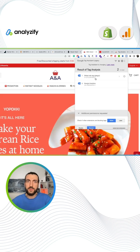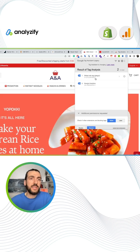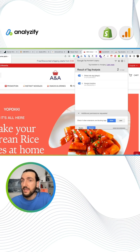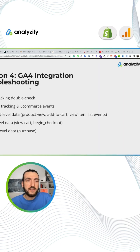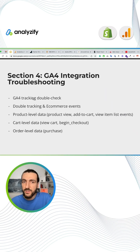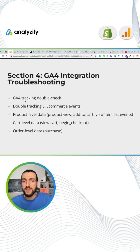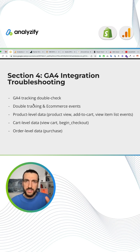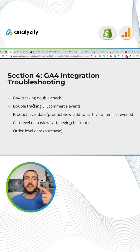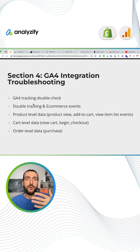Of course, this doesn't mean that tracking is proper — this only shows us that you have GA4 tracking and hopefully no double tracking. Because if there was double tracking — if the same GA4 tag appeared twice — Google Tag Assistant Legacy would warn us.